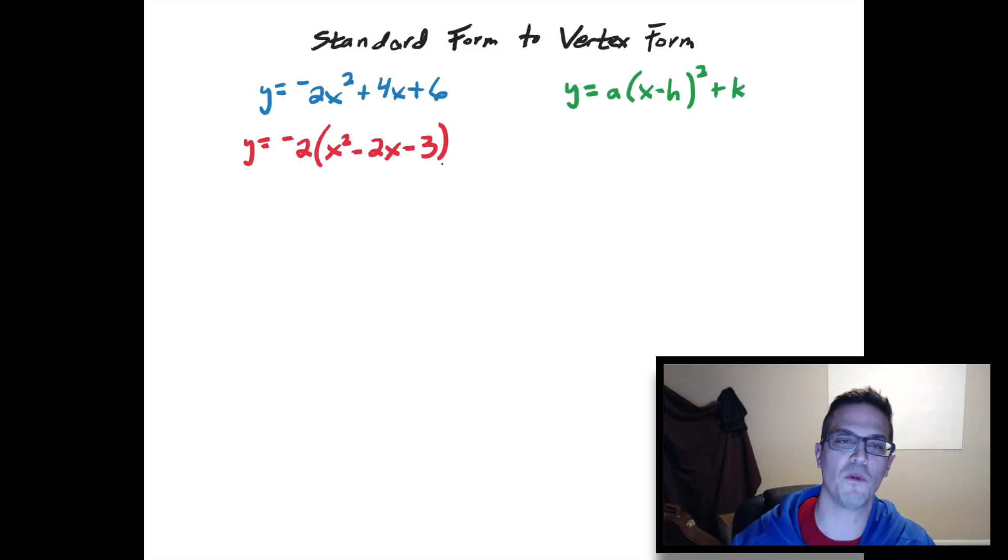From here we want to complete the square for this quadratic part that's in parentheses right here. In order to do that, first thing I'm going to do is spread out this equation a little bit. So I'm going to have the x squared here minus 2x and then I'm going to put this minus 3 over here.